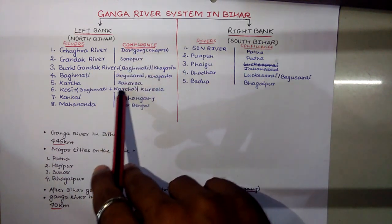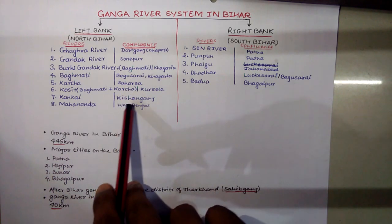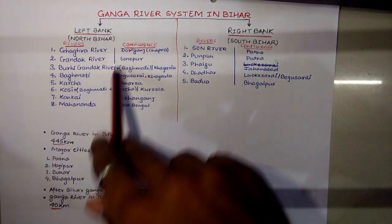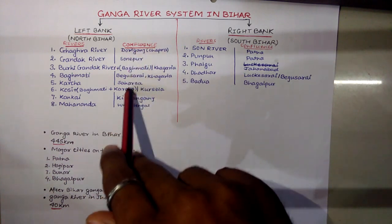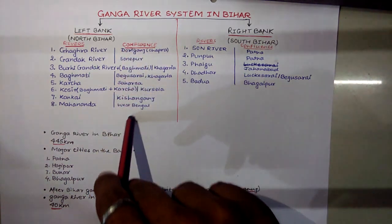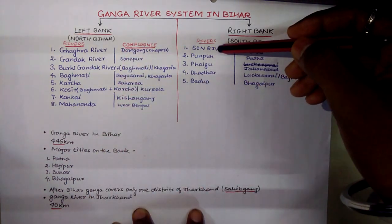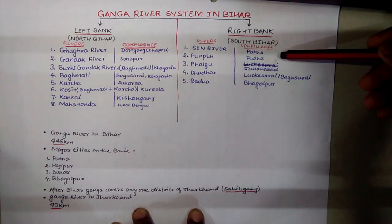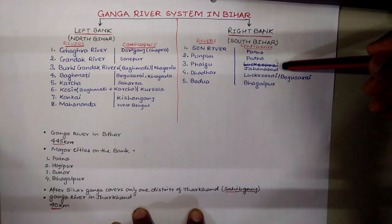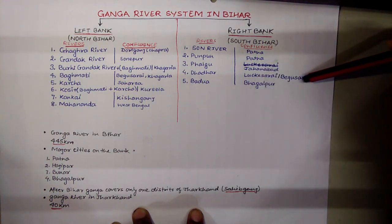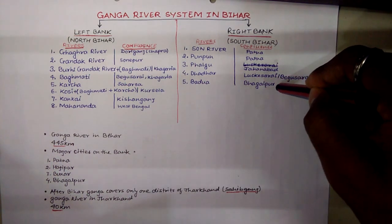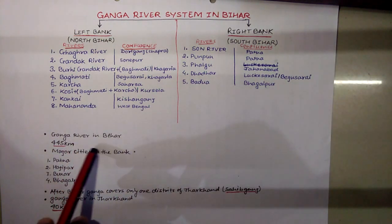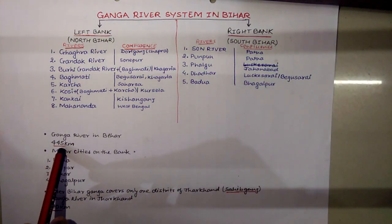The confluence points of these left bank rivers are: Doriganj, Sonpur, Bagmati, Khagadiya, Begusarai, Saharsha, Kursela, Kishanganj, and West Bengal. The right bank rivers are: Son, Punpun, Falgu, Dhadar, and Badwa. Their confluence points are: Patna, Patna and Jahanabad, Lakhisarai, Begusarai, and Bhagalpur. The Ganga river system in Bihar covers around 444 kilometers.